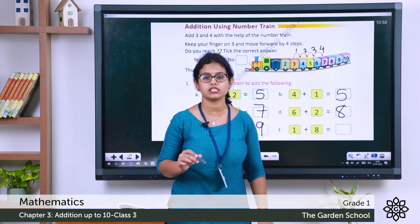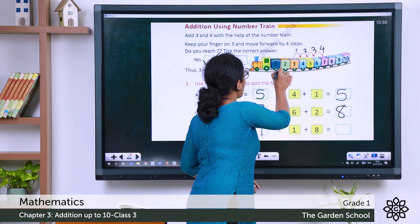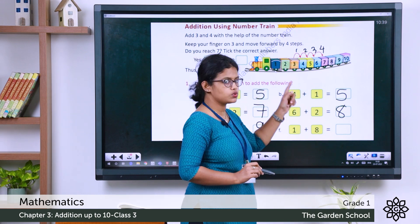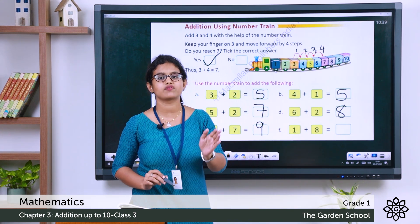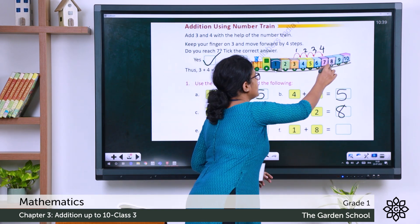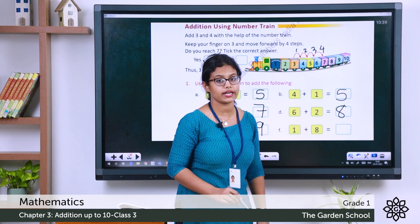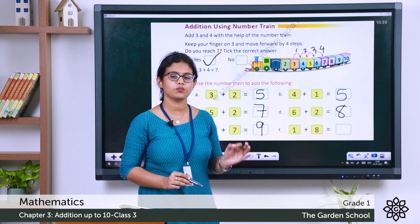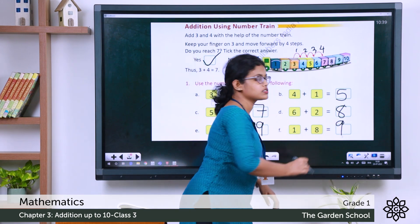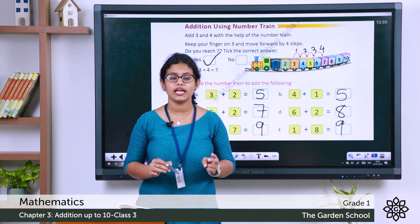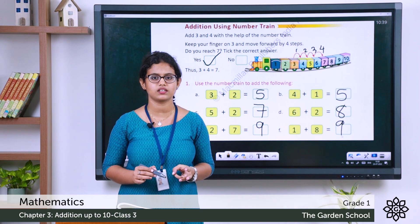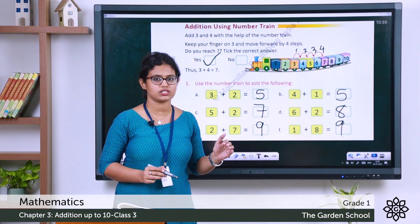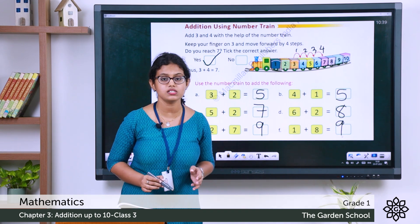Next: 1 plus 8. Keep your finger on number 1 and move 8 steps: 1 to 2 (1), 2 to 3 (2), and so on for 8 steps. You reach number 9. Or simply, 1 plus 8 is the same as 8 plus 1 — when you add 1 to any number you get the next number. So 1 plus 8 is 9. This is how we add 2 numbers on a number train.